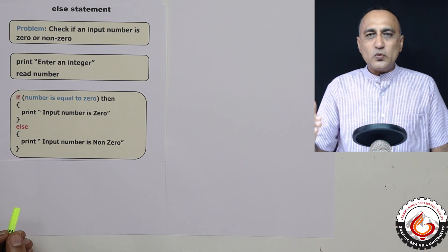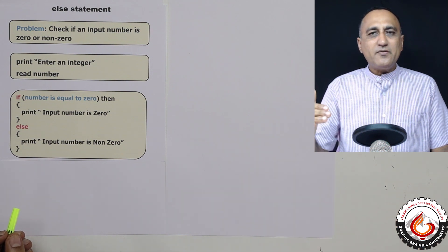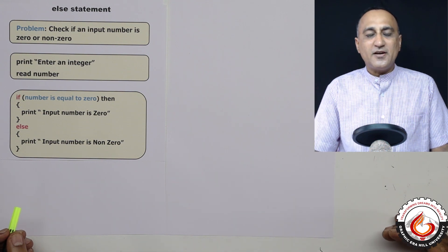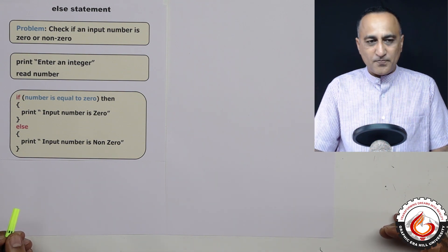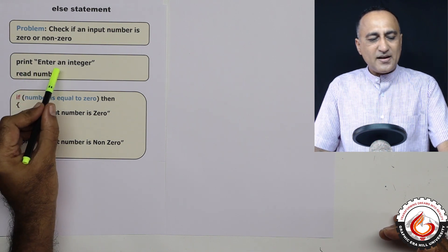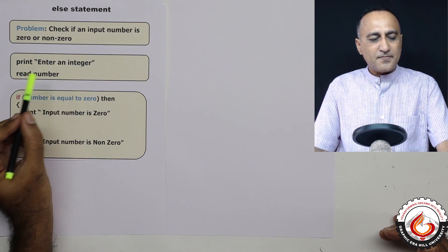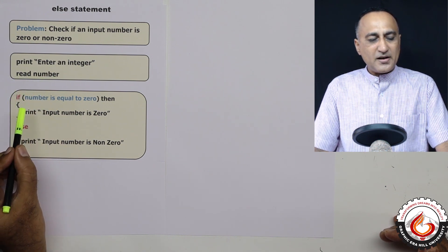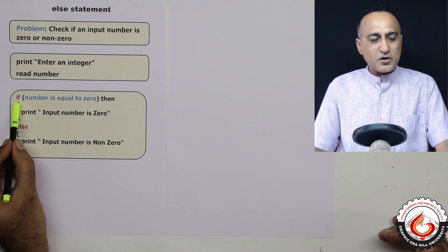So what I can do is if I use only if, it will tell me whether the number is zero. But suppose I also want to print the message if the number is non-zero. So what I will do is I will first ask the user to enter a number or enter an integer. I will then read the number. Then based on the number entered by the user, I will ask the question.